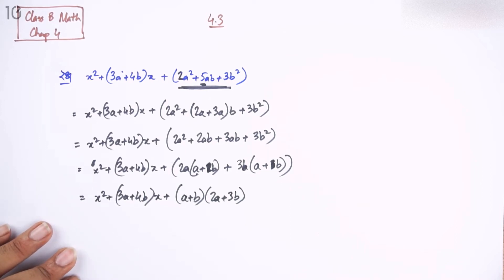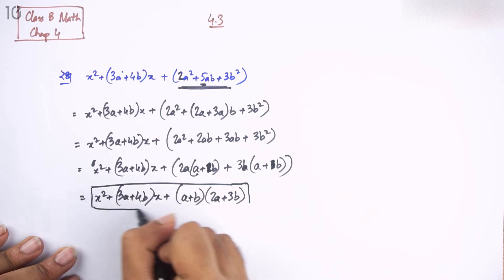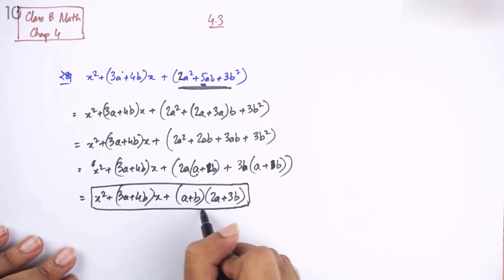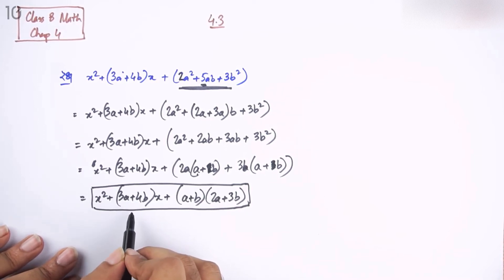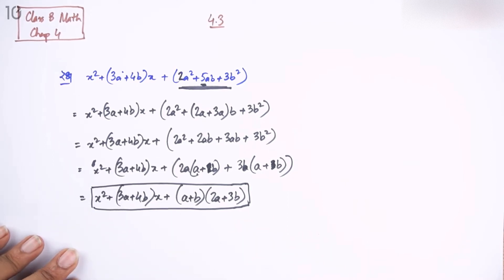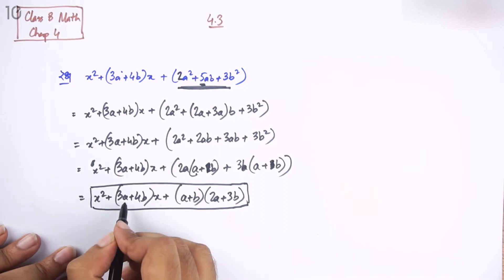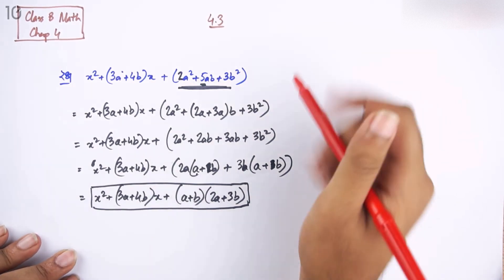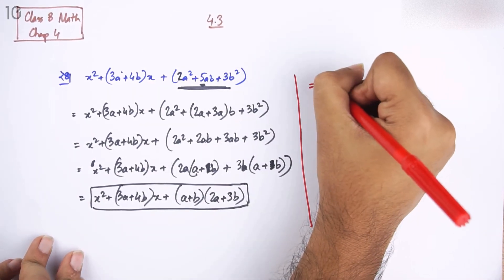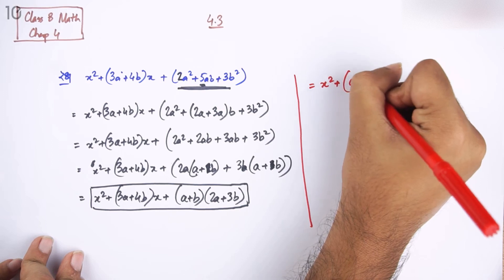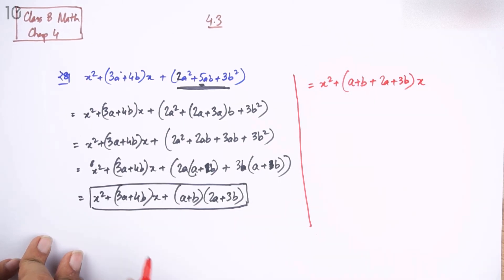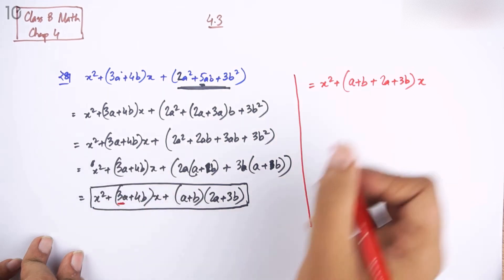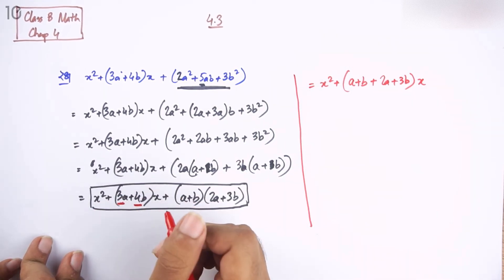Let's verify this. We know that the two terms are arranged the same way. Looking at 9 columns here: x squared plus a plus b plus twice a plus 3b into x. Then a plus twice a equals thrice a, and b plus 3b equals 4b. So we can confirm the sum here.